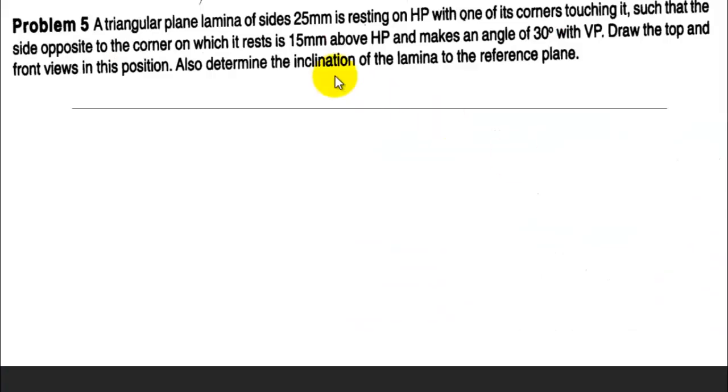Today's problem: a triangular plane lamina of size 25 mm is resting on HP with one of its corners touching it, such that the side opposite the corner on which it rests is 15 mm above HP and makes an angle 30 degrees with VP. Draw the top and front views in this position and also determine the inclination of the lamina to the reference planes.